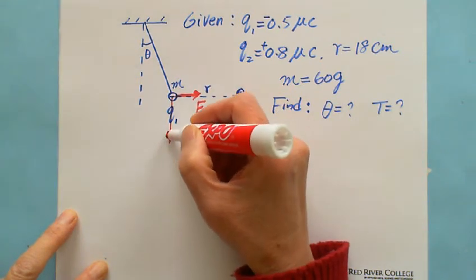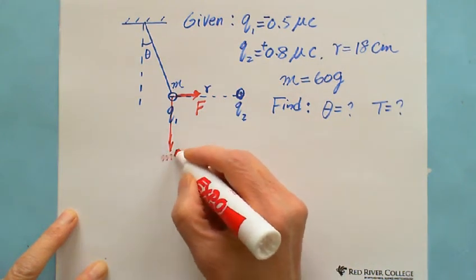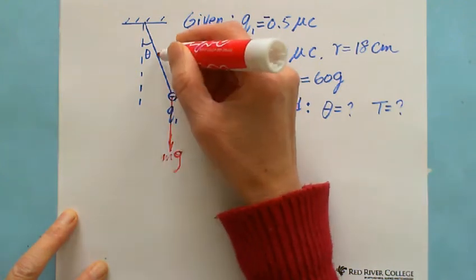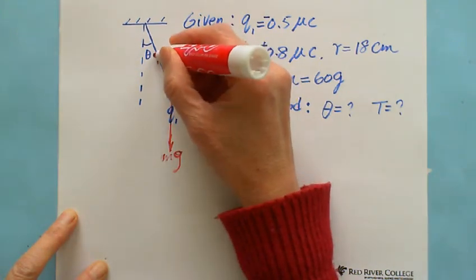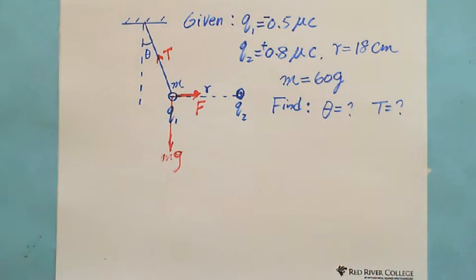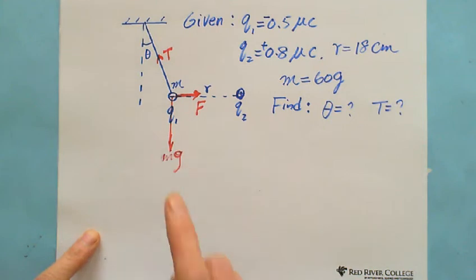There is another force which is gravity, right? Gravity brings it down, this is mg. And the tension force along the thread. So the small ball is acted on by three forces at the balance.